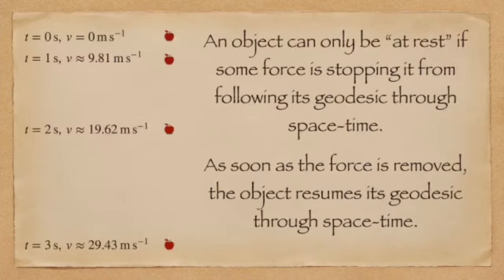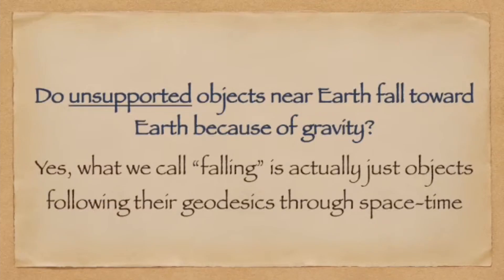Returning to the apple: the only force in this scenario is you holding the apple. Holding the apple stops it from going along its geodesic in space-time. As soon as you stop doing that, that's exactly what it goes on to do. Do unsupported objects fall because of the action of gravity? Yes. Falling is the name we give to objects that are actually just following their geodesic through space-time, and the tendency for objects to follow such geodesics is just gravity.